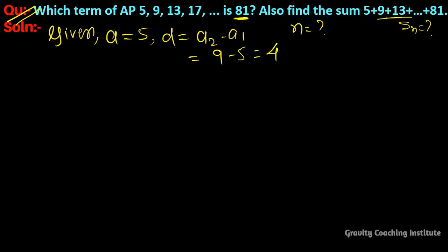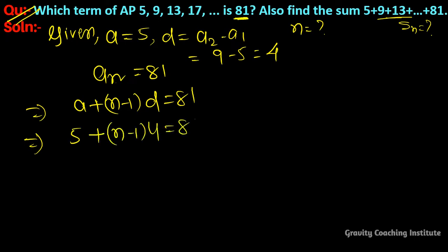nth term given is 81. Using formula an = a + (n-1)d = 81. If we put a and d values, we get 5 + (n-1)4 = 81, which gives 5 + 4n - 4 = 81.